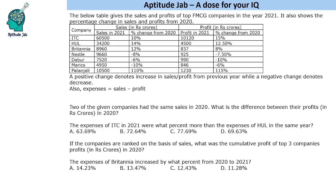Welcome to Aptitude Lab. This is a set based on a data table giving the sales and profit of seven top FMCG companies in the years 2021 and 2020. The sales and profits for 2021 are given along with percentage change from 2020. A positive change denotes increase and a negative value denotes decrease — so minus 7.5 means a decrease of 7.5 percent. Expenses is defined as sales minus profit.